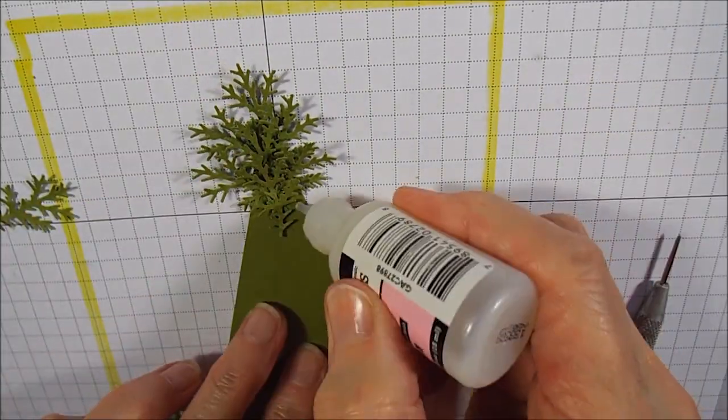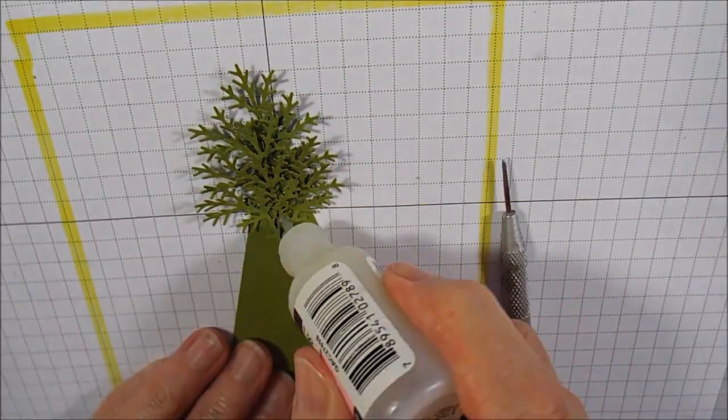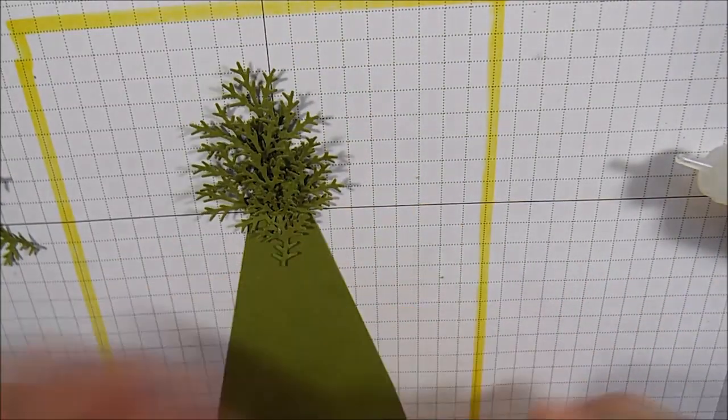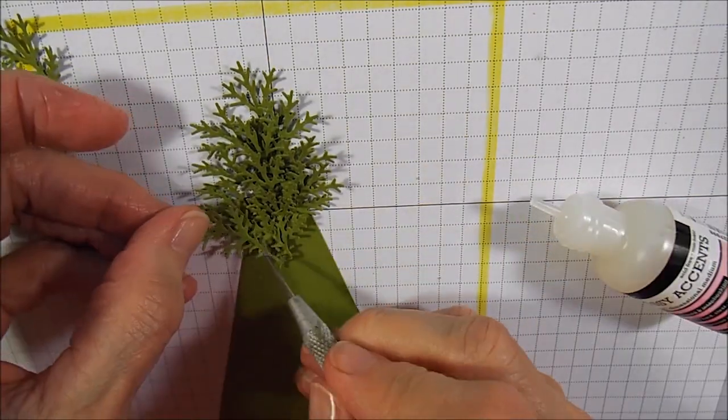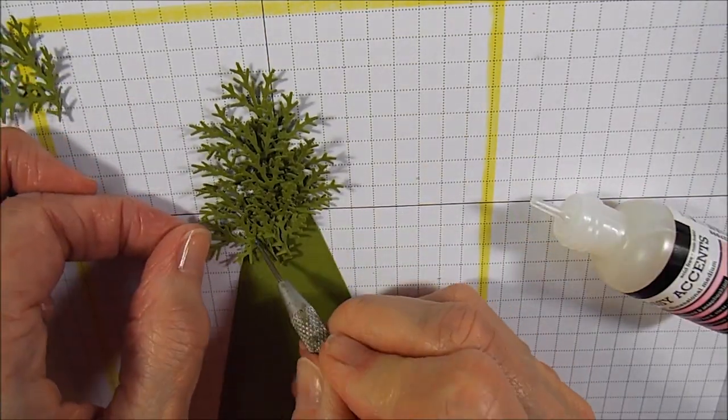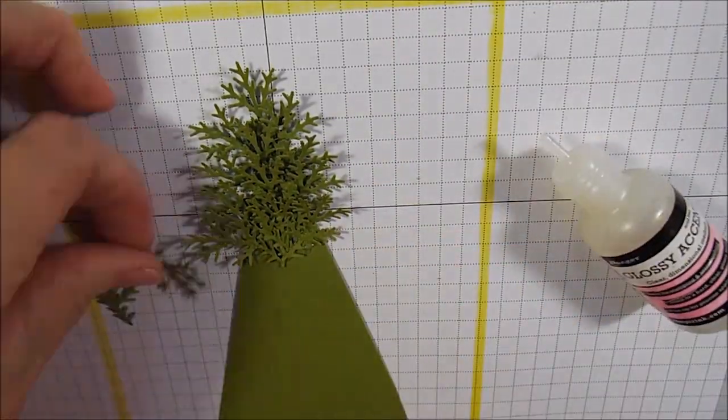I've sped this up here for you so you don't have to watch in real time the branches getting attached. I used the Martha Stewart Branch Punch for my project because it's a lot easier to get a mass volume of branches with the punch than it is to run a die through your big shot.